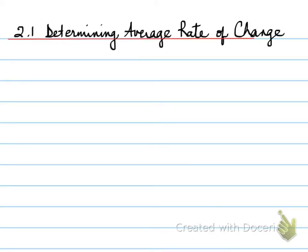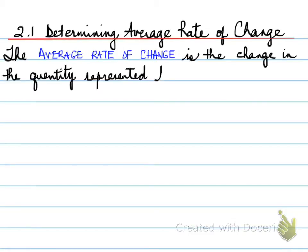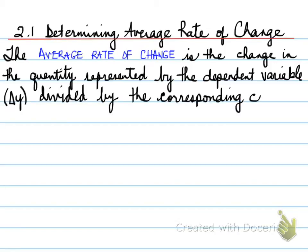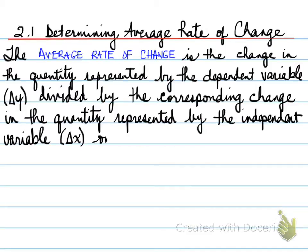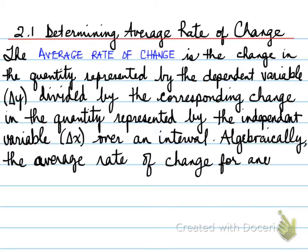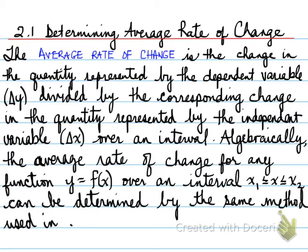2.1 - determining average rate of change. The average rate of change is the change in the quantity represented by the dependent variable, delta y, divided by the corresponding change in the quantity represented by the independent variable, delta x, over an interval. Algebraically, the average rate of change for any function y = f(x) over an interval x1 and x2 can be determined by the same method used in grade 9 for slope.